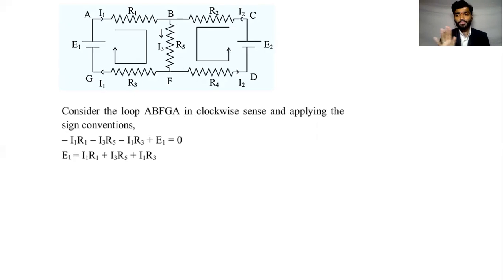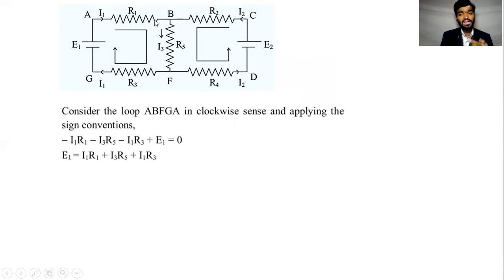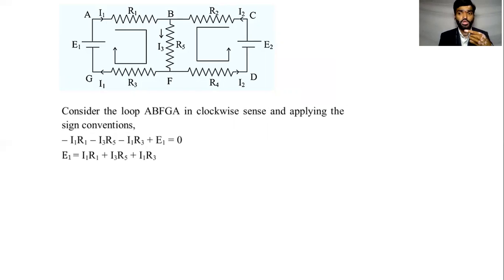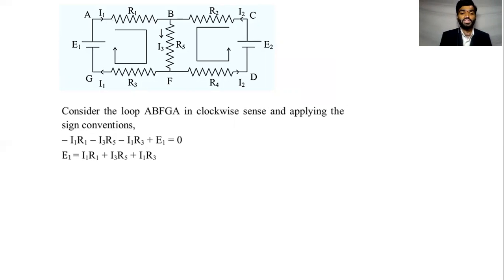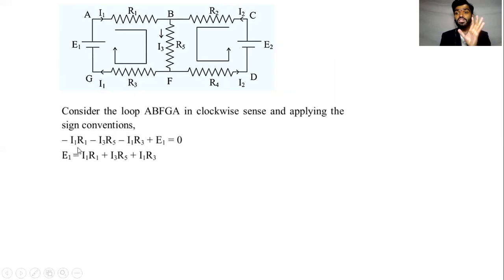So what do we do with the sign convention? When our loop direction and current direction are the same, the current sign is negative — minus I1 times R1, and V equals IR. So minus I1 R1. When the loop direction and current direction are opposite, the sign is positive — plus I2 R2.